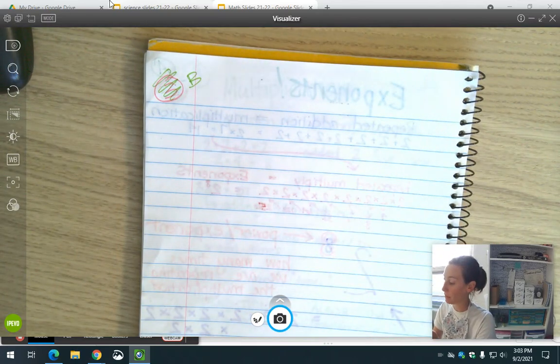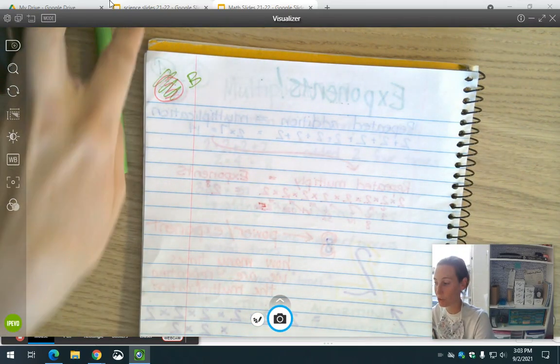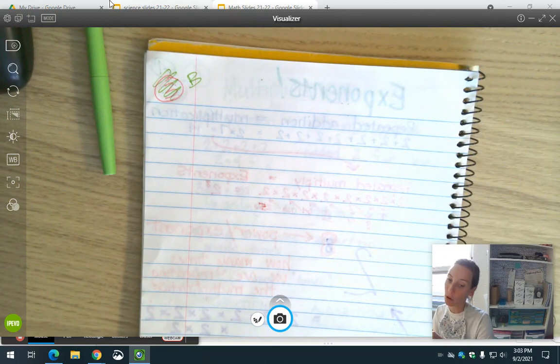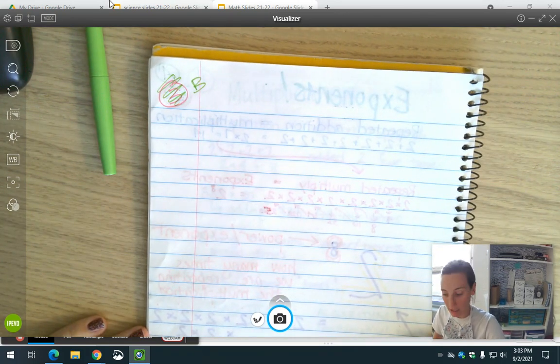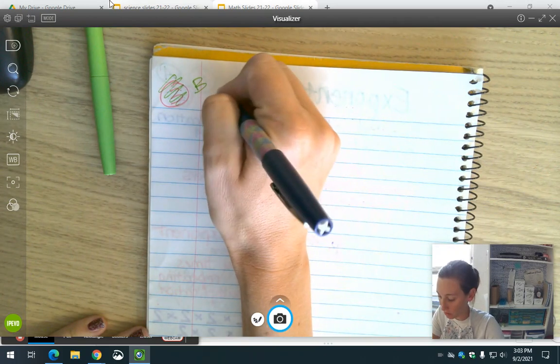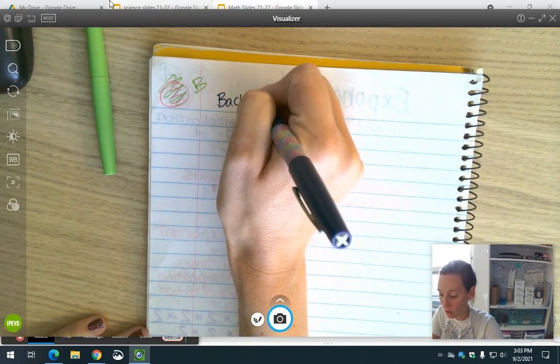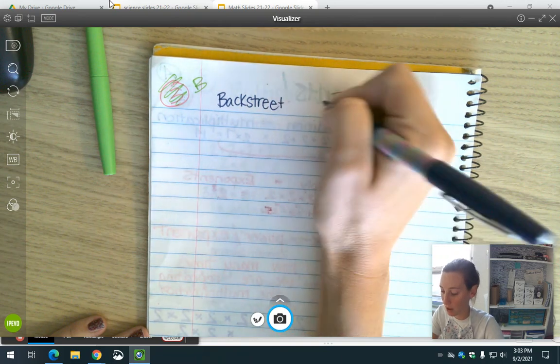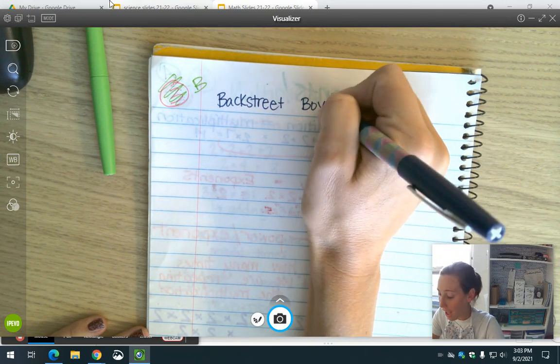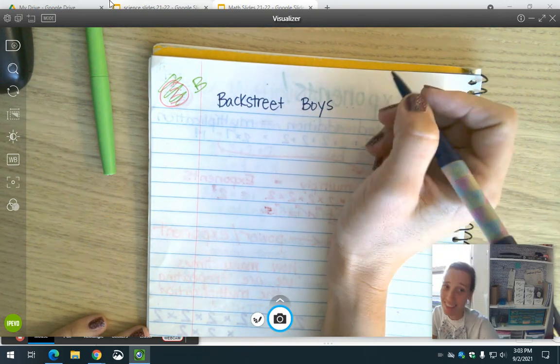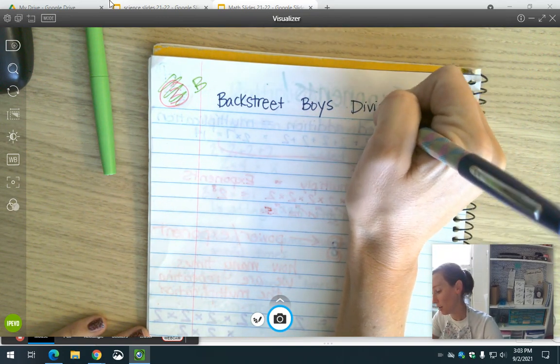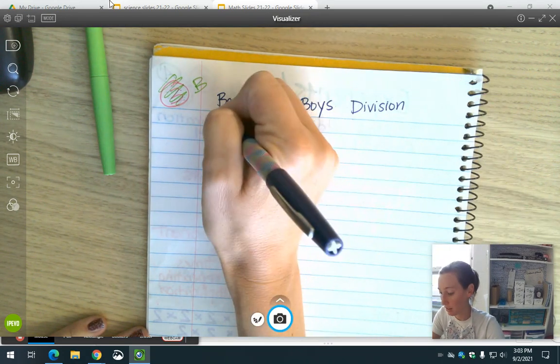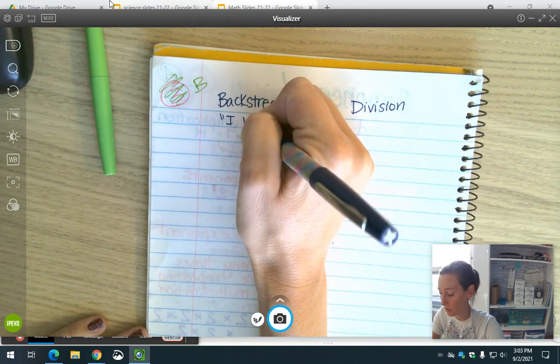First thing I need you to know is I call this Backstreet Boys division. In case you're too young, the Backstreet Boys have a song where they say 'I want it that way,' and that is what we're going for. I want it that way. You have to divide this way.